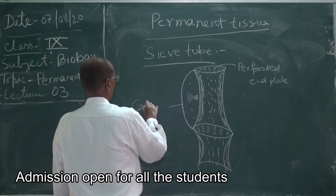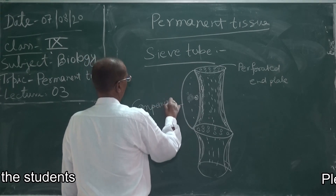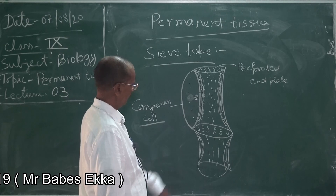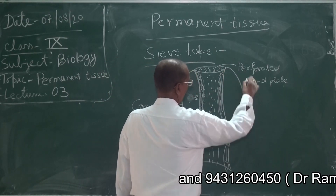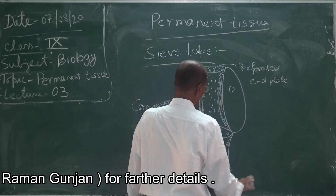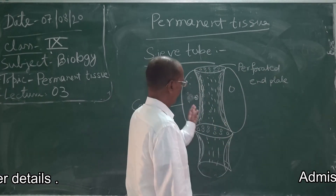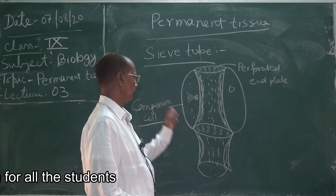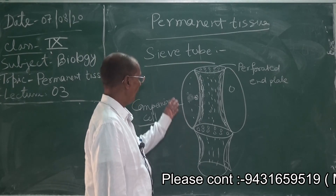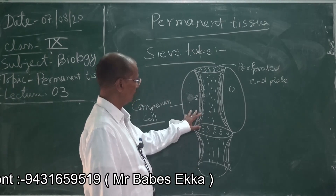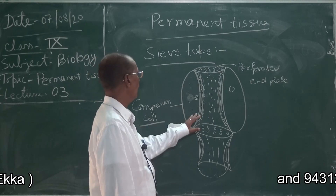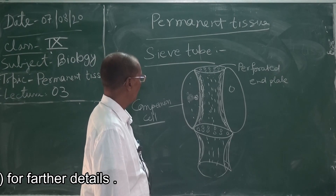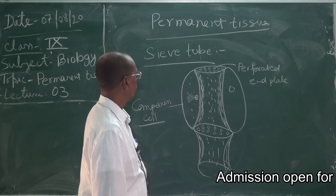The companion cell is also living. Sieve tube and companion cells together are utilized in the transport of food, and these two are the main living components of the phloem permanent tissue.